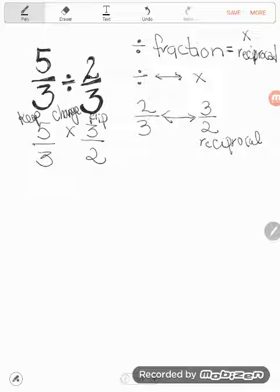And now this is just a multiplication problem. So we can cross reduce any common factors, and then multiply straight across. And I get this answer 5 halves.